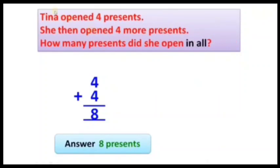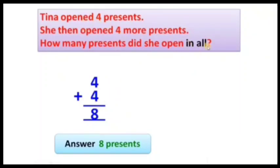Tina opened four presents. She then opened four more presents. How many presents did she open in all? First Tina opened four presents, then she opened four more. Four plus four — add the two — you get eight. The answer is eight presents.